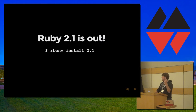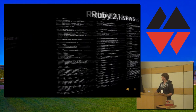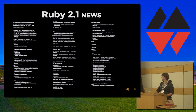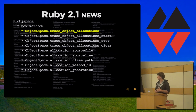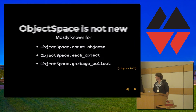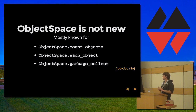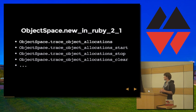You can grab it with RVM or rbenv — they both allow you to grab it. Here's the news file of all the features, and what I'm going to talk about is this little guy in the corner: ObjectSpace trace_object_allocations. ObjectSpace is not new — you may have used count_objects or each_object; it's where the garbage collect method is. But they've added a couple new methods in 2.1: trace_object_allocations, and then a couple sibling functions — start, stop, clear.